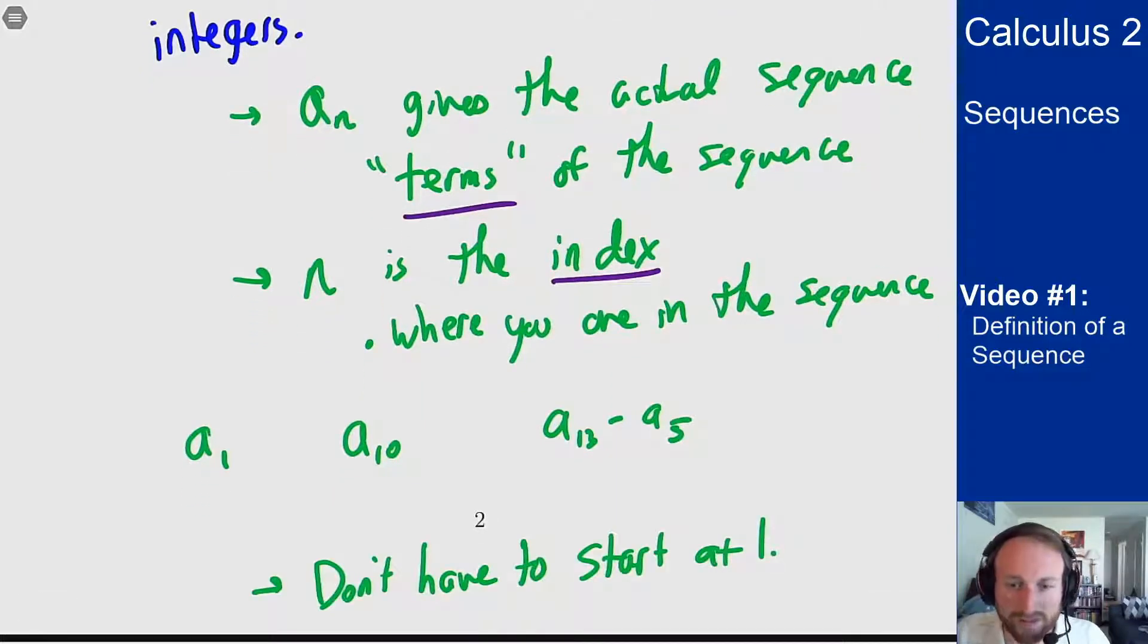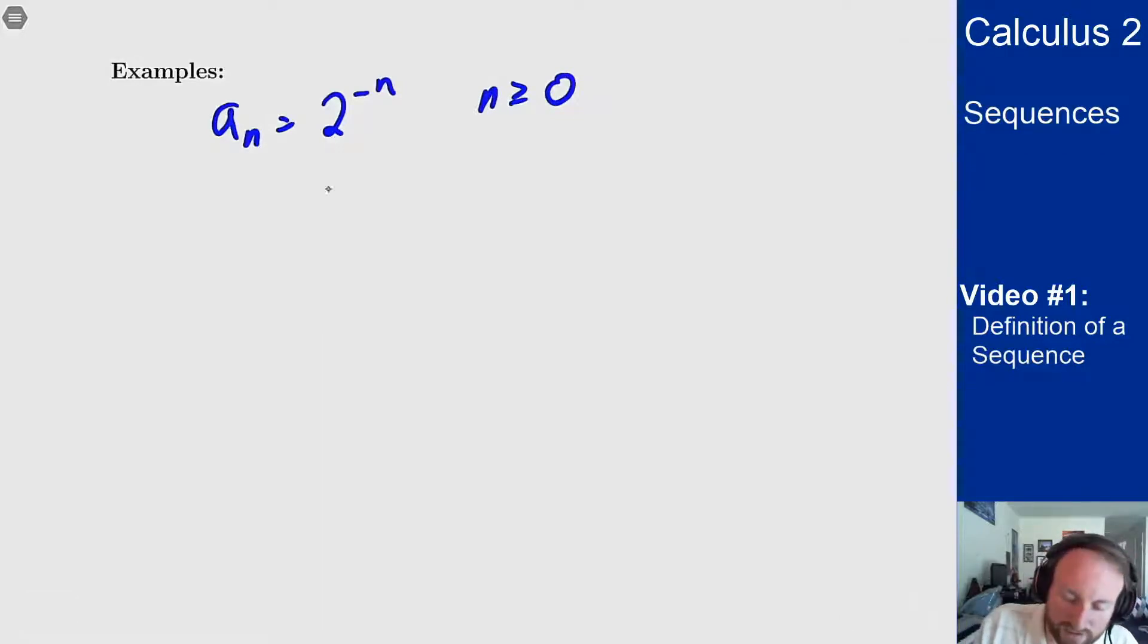We'll see some examples of what sequences might look like. We could have a sequence like an is 2 to the minus n for n greater than or equal to 0. If we were to start listing that out, we just write this as a set and we start counting. So if I plug in 0, what do I get? I get 2 to the minus 0, which is 1.